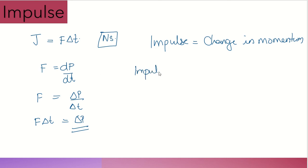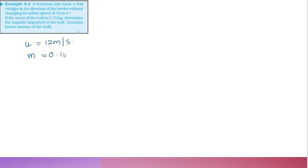Problem: A batsman hits back a ball straight in the direction of the bowler without changing its initial speed of 12 meters per second. The mass of the ball is 0.15 kg. Determine the impulse imparted to the ball. Assume linear motion. Given: initial speed = 12 m/s, mass = 0.15 kg.